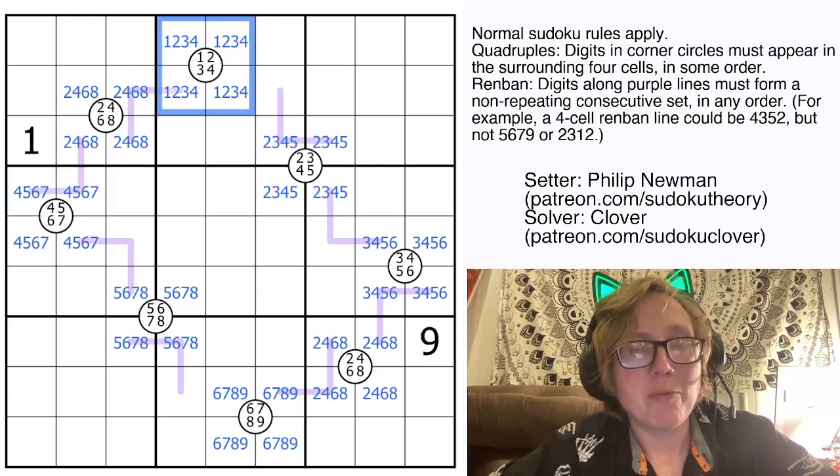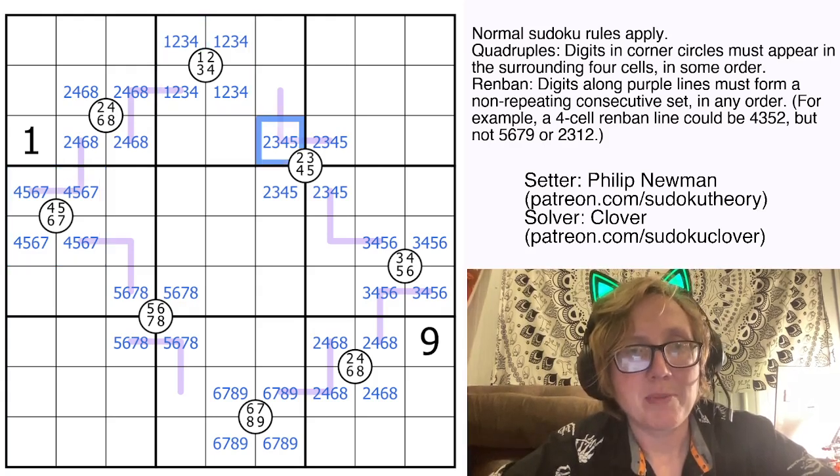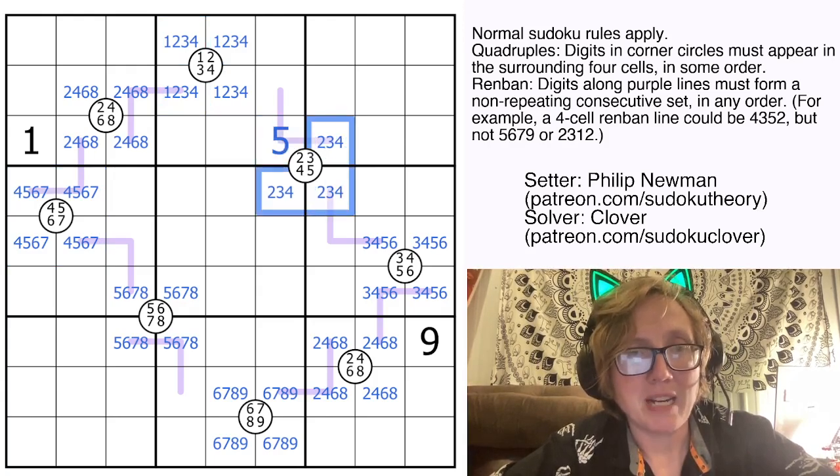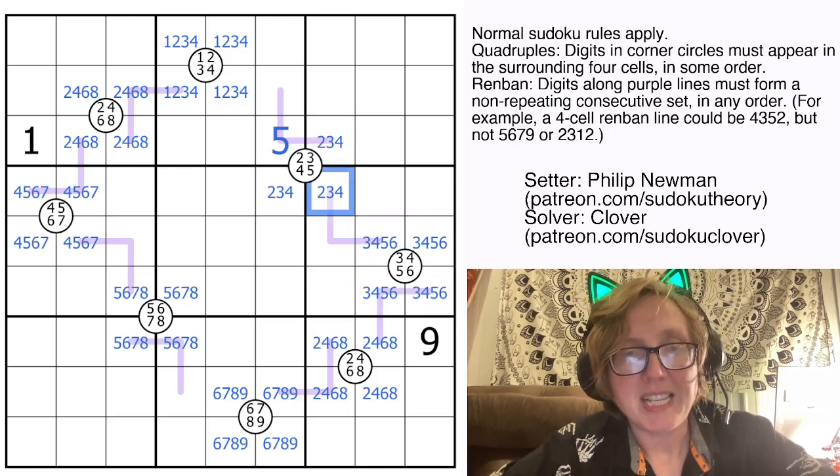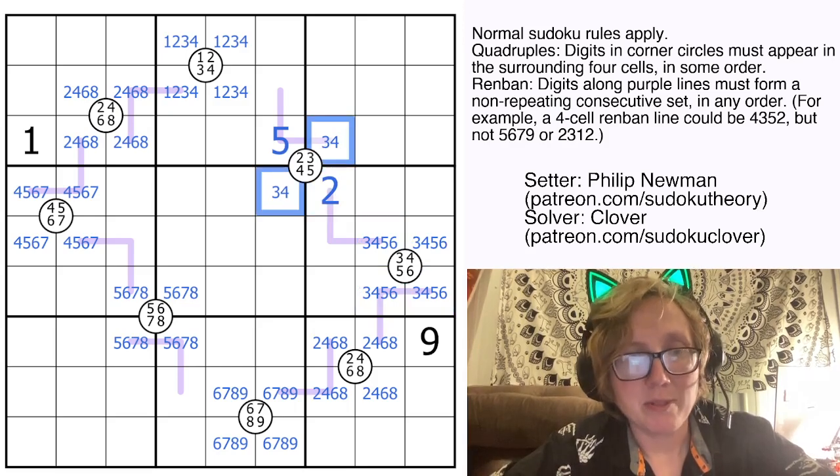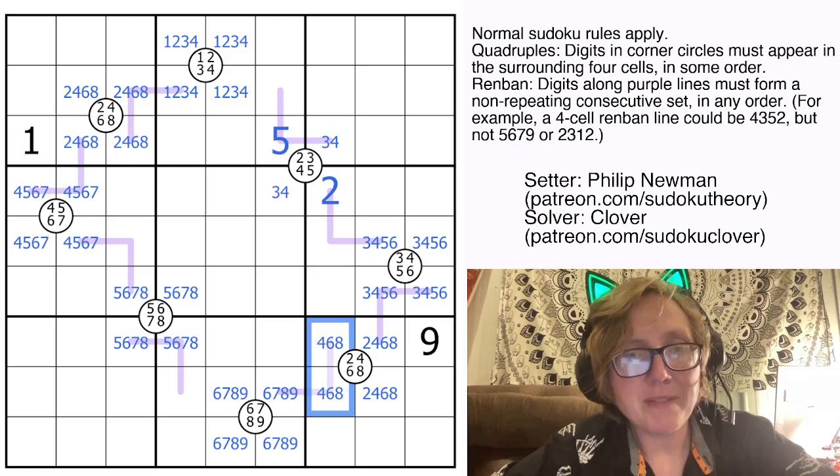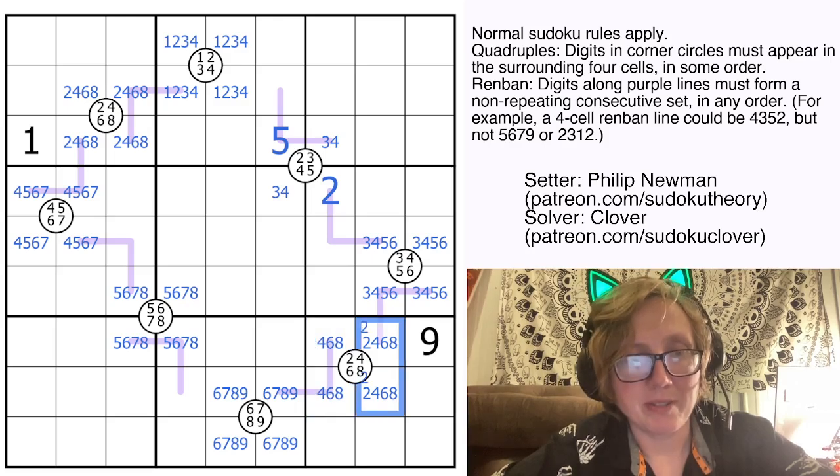So now we can see we have 1, 2, 3, and 4 accounted for in this region already, so that can't be any of those, so that must be 5. So we can remove 5 from the rest of this quad. We have 3 and 4 accounted for already here, so that can't be 3 or 4 and it must be 2. We can remove 2 elsewhere. So none of those digits are 2. My 2 goes in one of those cells.